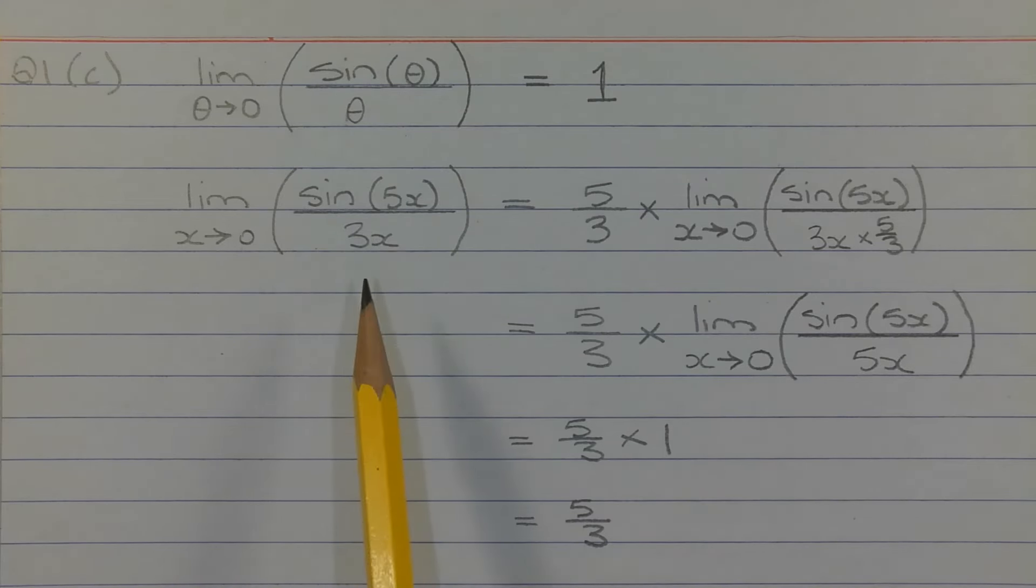The way we do that is we multiply 3x by 5 over 3, but we compensate for that by multiplying the entire limit by 5 over 3.